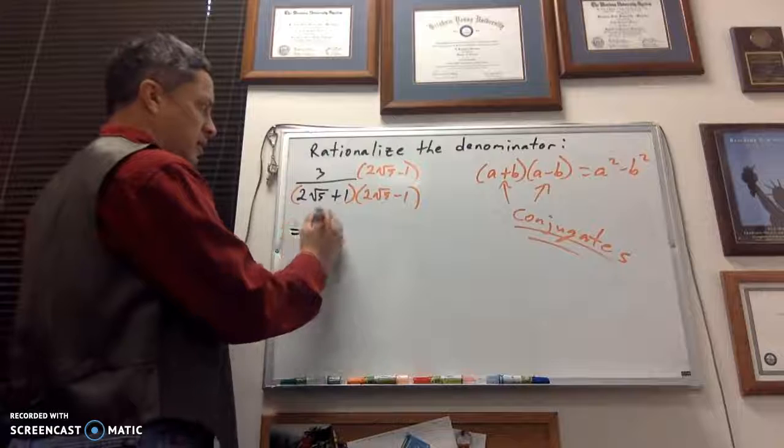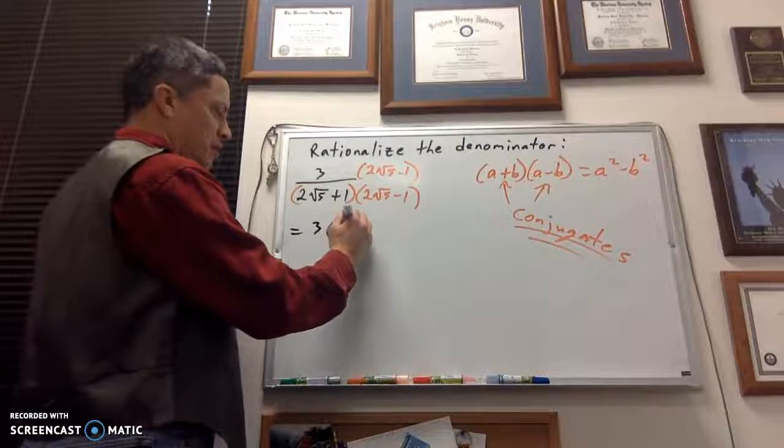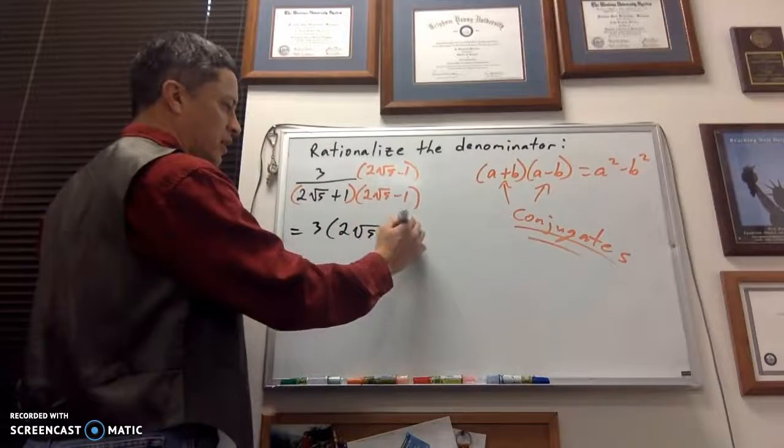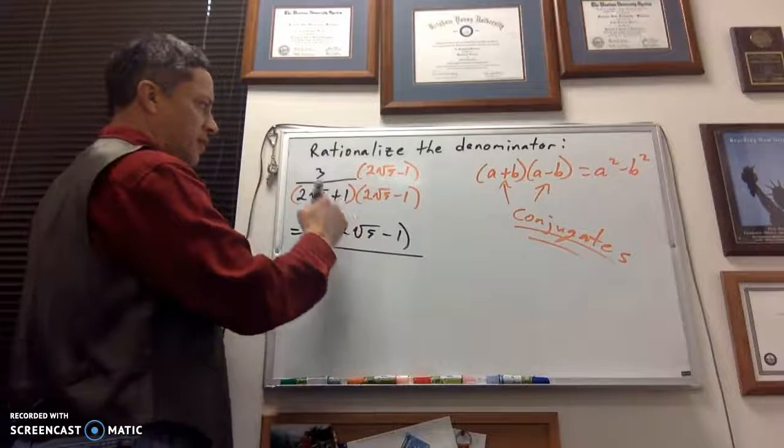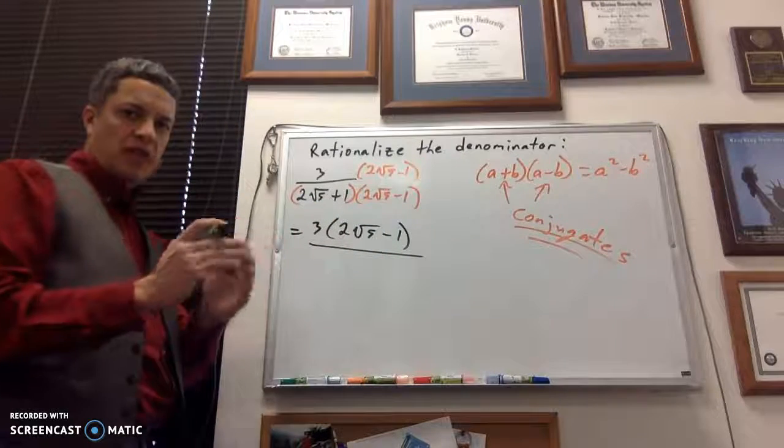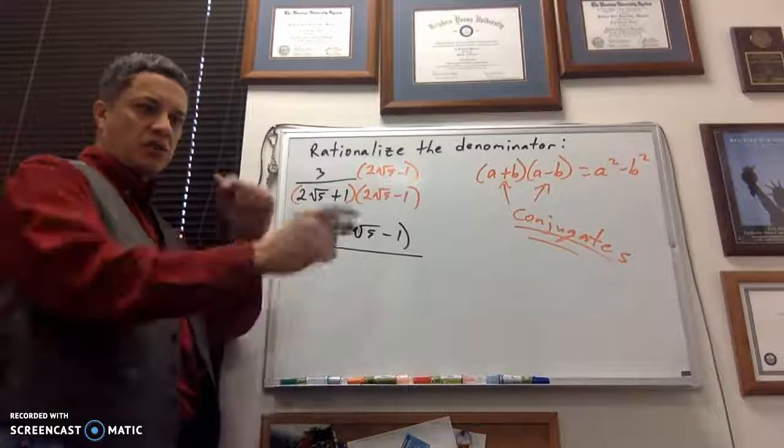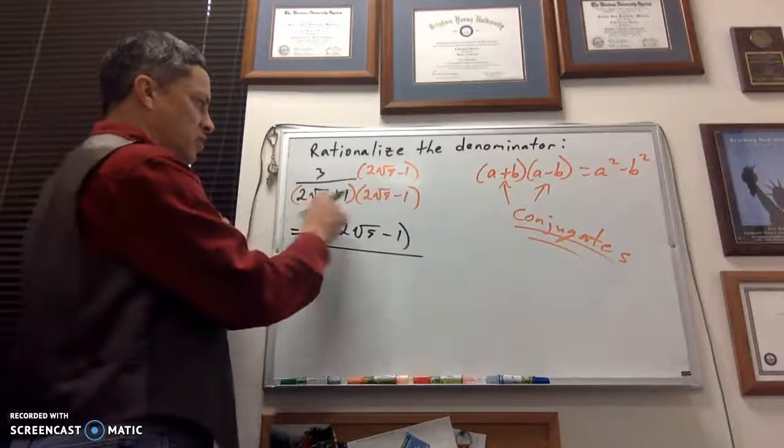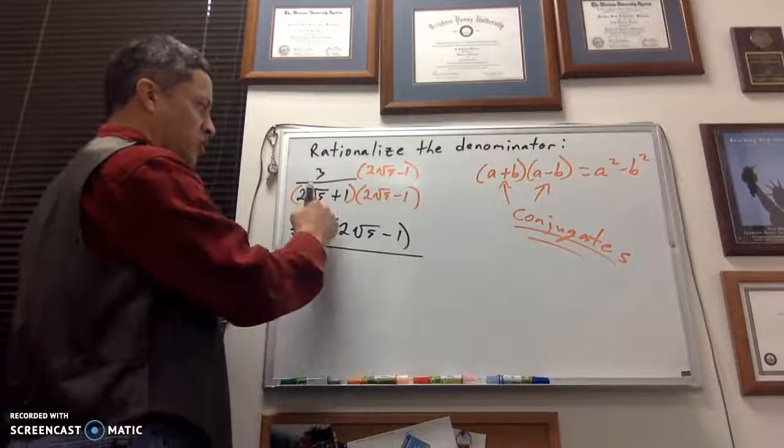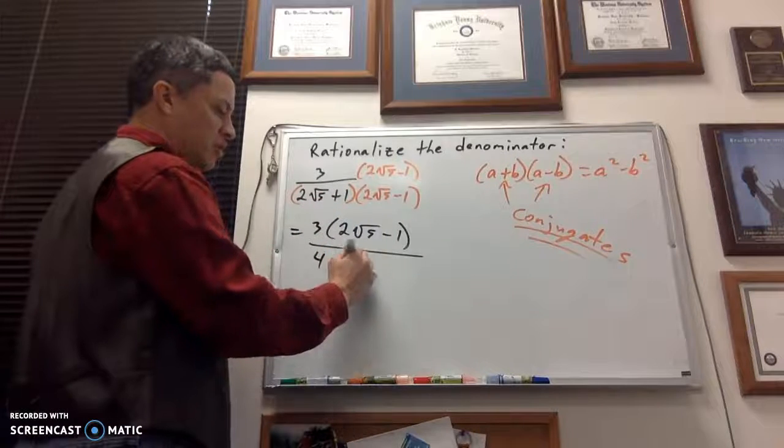Alright, so my numerator is now 3 times the quantity of 2 root 5 minus 1. And my denominator, now remember, multiply the outside of the radicals together and the inside of the radicals together, but don't try to mix and mingle. So 2 times 2 is 4. The square root of 5 times the square root of 5 is the square root of 25.